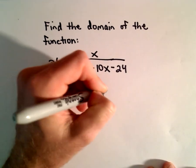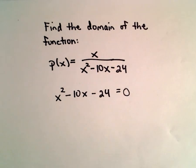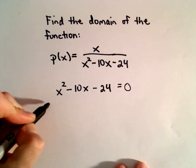So I'm going to take the denominator, x squared minus 10x minus 24, and set that equal to 0. And to solve this, we've got a quadratic equation I'm going to try to factor.